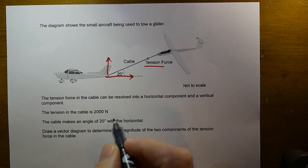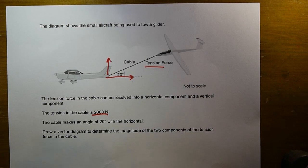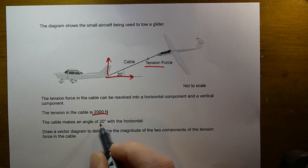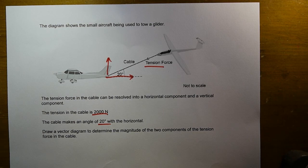So in this question we've got a single force of tension in this cable of 2000 newtons, and we're told that it is making an angle of 20 degrees to the horizontal. And then we need to use a scale diagram or a vector diagram to break it down into its components.